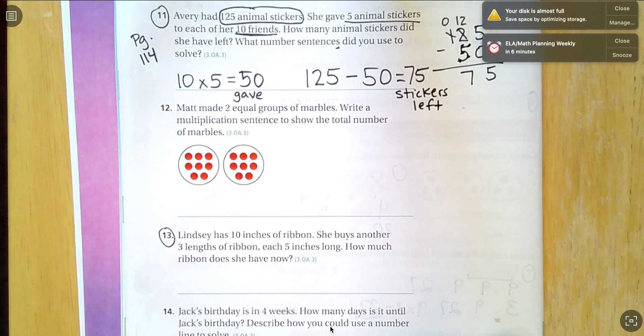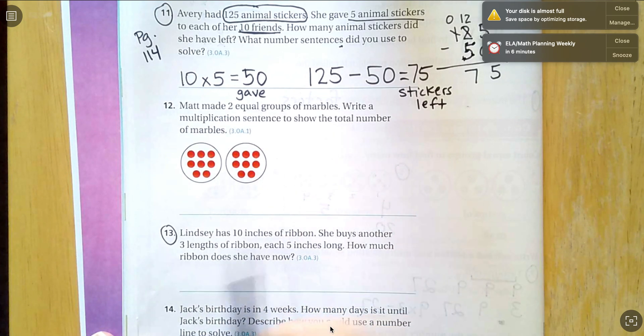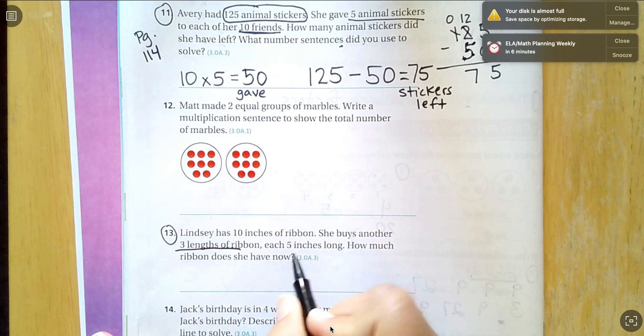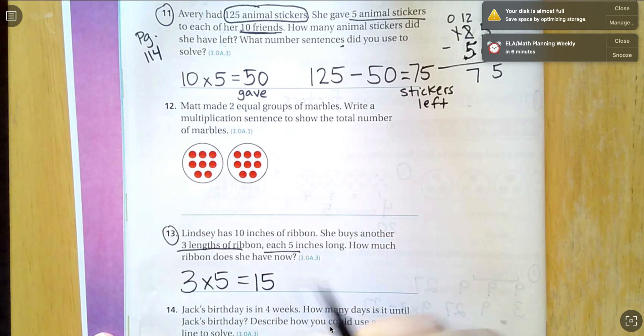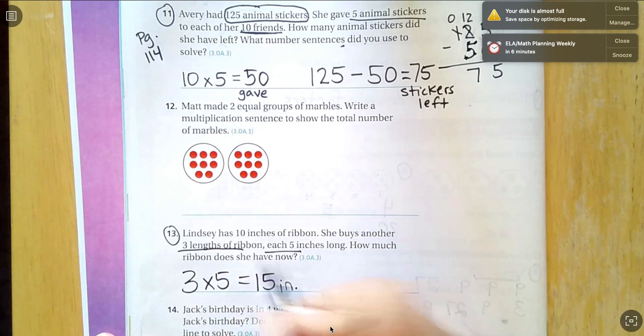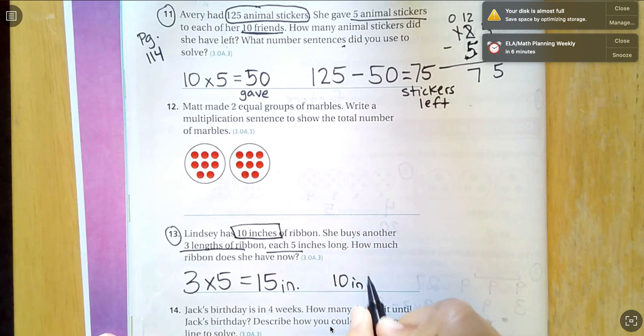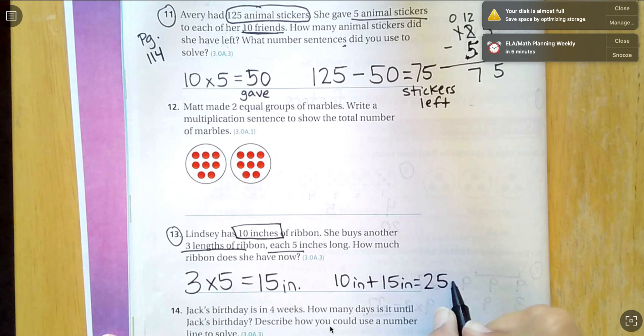And then number 13, I've got Lindsay has 10 inches of ribbon. She buys another three lengths of ribbon, each five inches long. How much ribbon does she have now? So this is also two steps. She's buying three lengths of five each. Three times five is 15 inches, but she already started with 10 inches. So 10 inches plus 15 inches equals 25 inches.